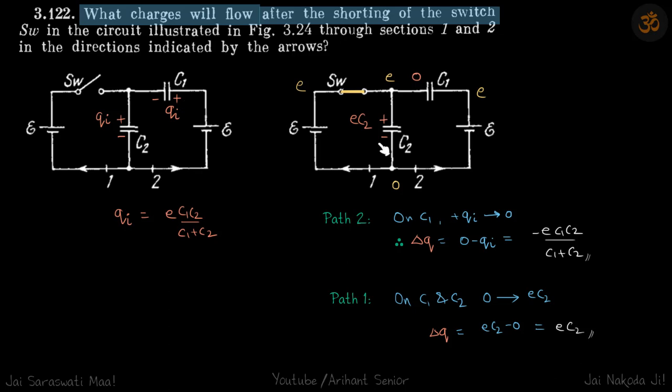Now we need to find the charges flowing in these directions. On path two, that is this one, all the charges are here. So it goes from qi to zero. Flow of charge is final charge minus initial charge, so zero minus qi, which will give our answer because we already know qi.